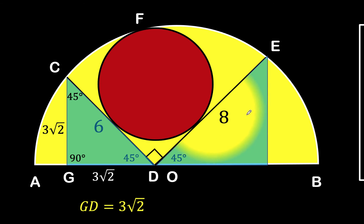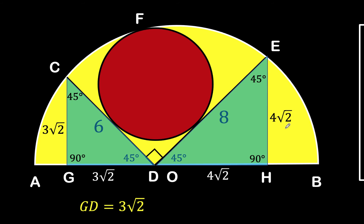Next, let's do the same thing for the other side. We have another right triangle with a 45-degree angle and a 90-degree angle, making the other angle also 45 degrees. Using the same formula, the length of segment EH and the length of segment DH are both one half of 8 times √2, which is 4√2. So the length of segment DH is 4√2.